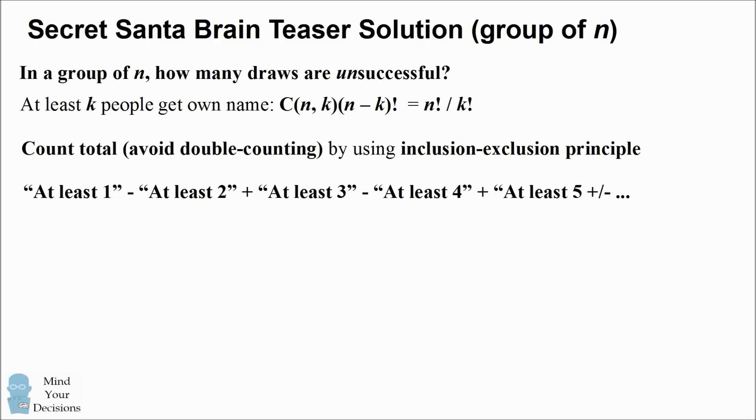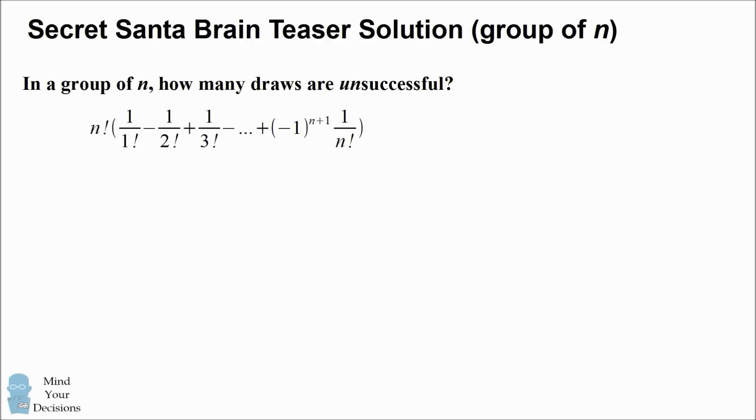So you may remember this from like a Venn diagram. If you want the probability of A or B, you take the probability of A plus the probability of B, and you subtract out the probability of A and B. So when we substitute our formula into this inclusion-exclusion principle, we end up with the alternating series of n factorial divided by the reciprocal of factorials. We can factor out n factorial, and we have the alternating sum of the reciprocals of factorials. So these are the total number of ways, the total number of draws, that are unsuccessful.